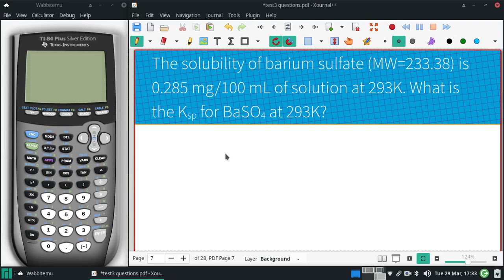The solubility of barium sulfate, given the molecular weight there, is 0.285 milligrams for every 100 milliliters at 293 Kelvin. What is the Ksp for barium sulfate at that temperature?